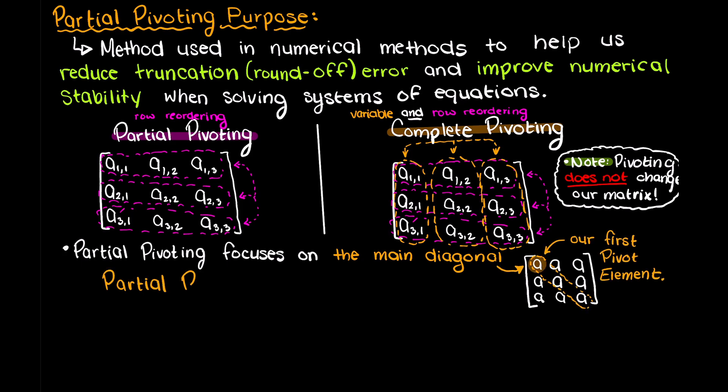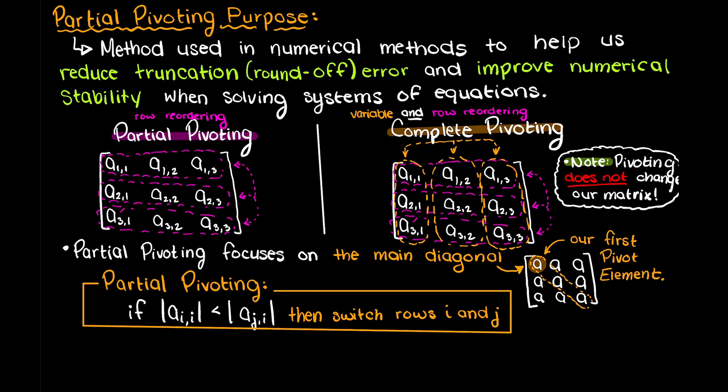As a formula, we use partial pivoting if the absolute value of our pivot element, the element along our main diagonal in our row of interest, is smaller than another element in the same column. Then we switch the rows, thereby pivoting them. Then you would continue and complete your numerical method for that row and repeat this process.